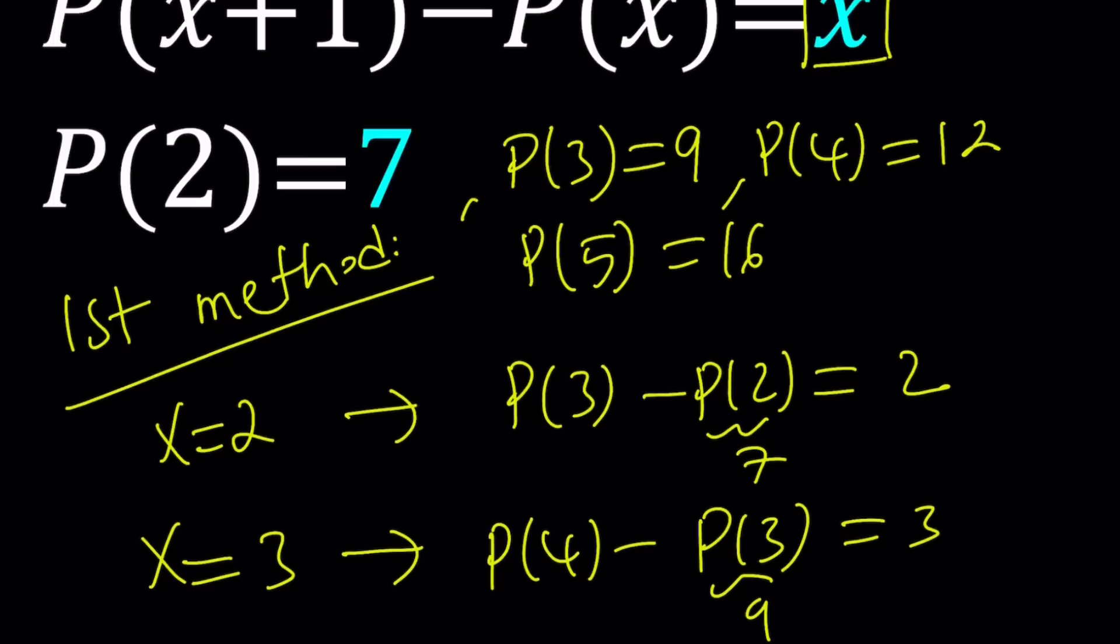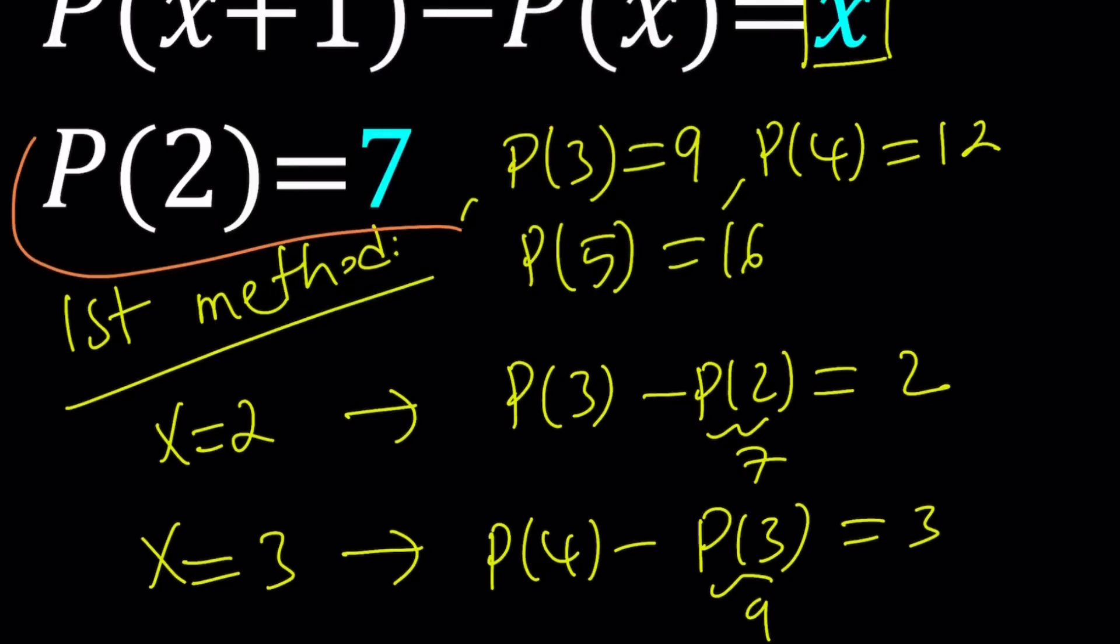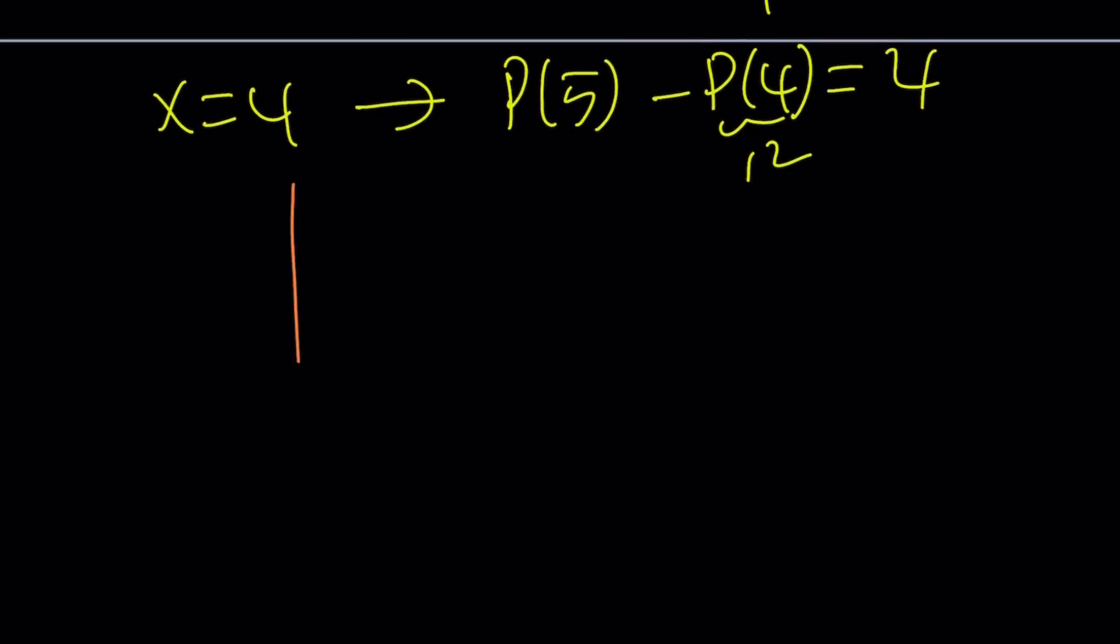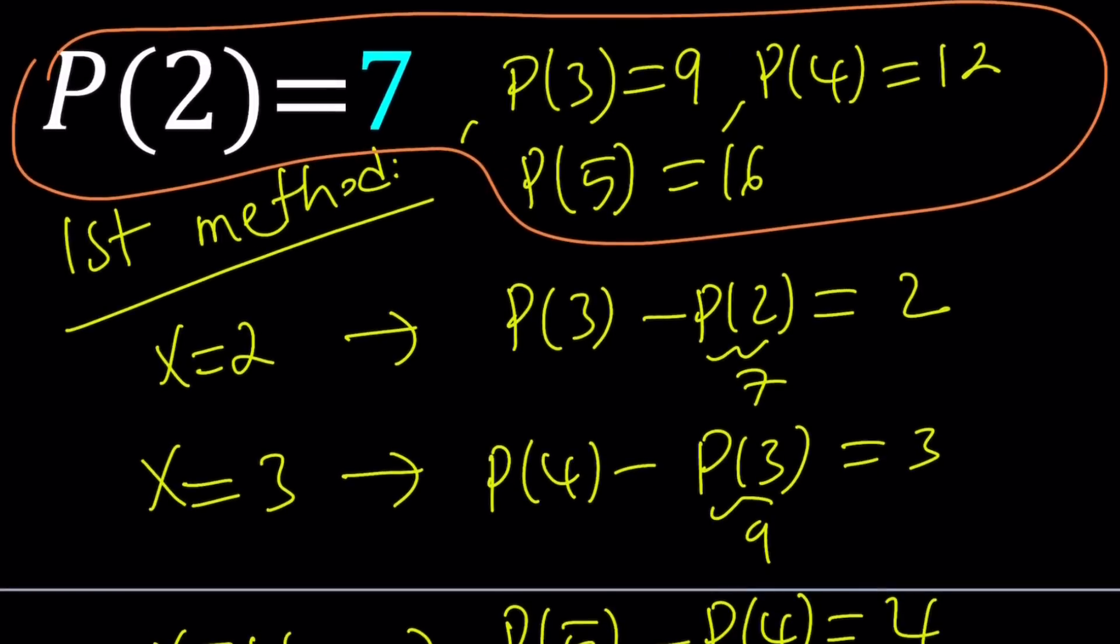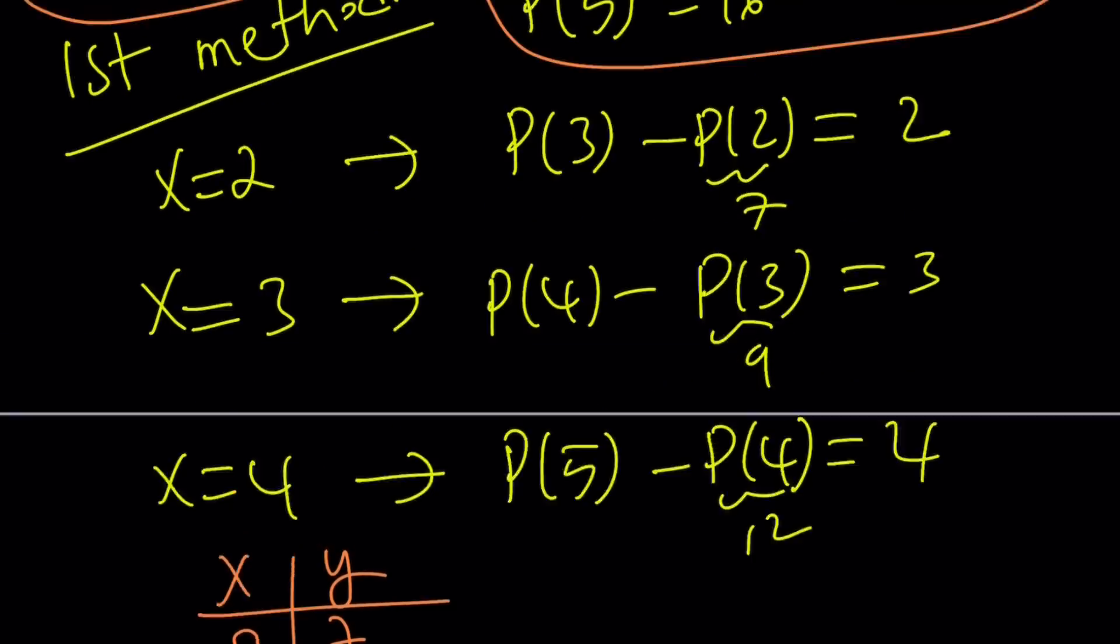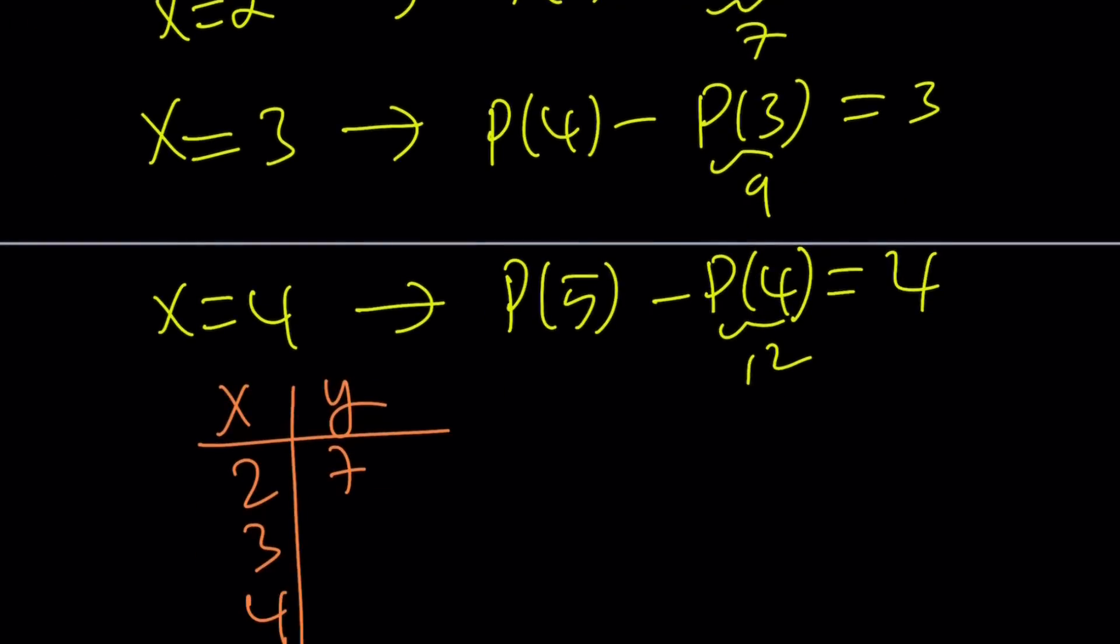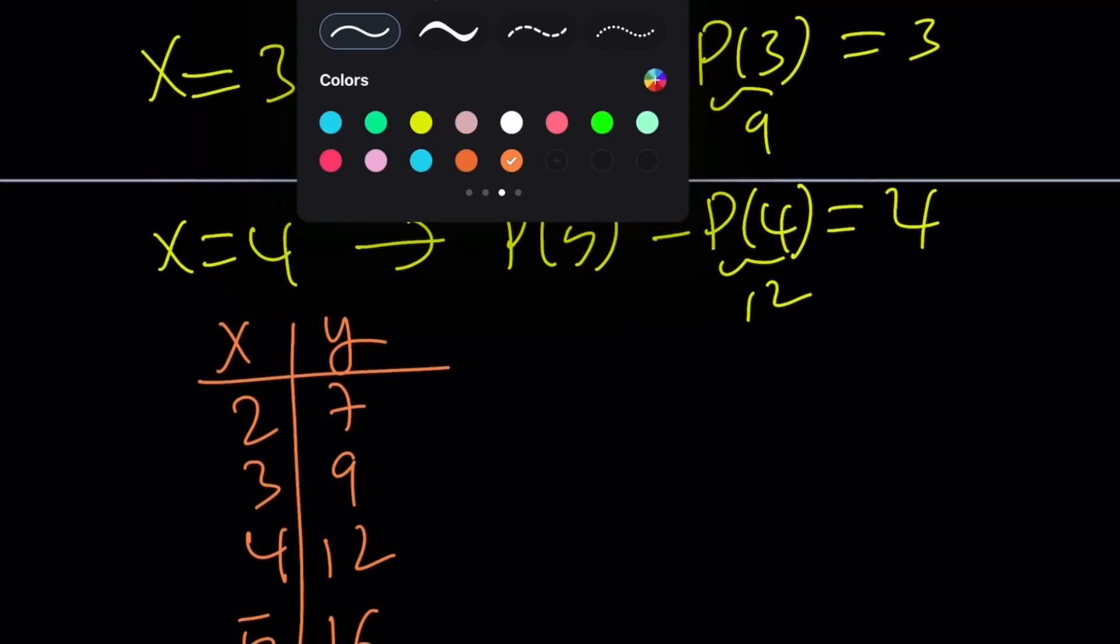And then what we're going to do is we're going to make a table with these values. We've got four values, one given, three we found. Let's go ahead and put it together. Let's make a table, an xy table, and some people call it a t table. Not the one that you drink tea on, but anyways, that's another thing. 2, 3, 4, and 5, right? That's what I used for x values. And then I got 7, 9, 12, 16. Maybe you already got the idea. Maybe what I'm about to show you is really cool.